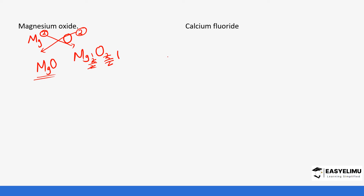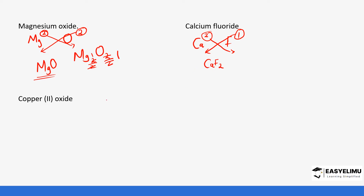Another example: calcium fluoride. The symbol for calcium is Ca and the valency is two. Fluorine's symbol is F - note there is a tendency for students to write Fl, but it is just F. The valency of fluorine is one. Crisscross these valencies and it becomes CaF2 - calcium fluoride.